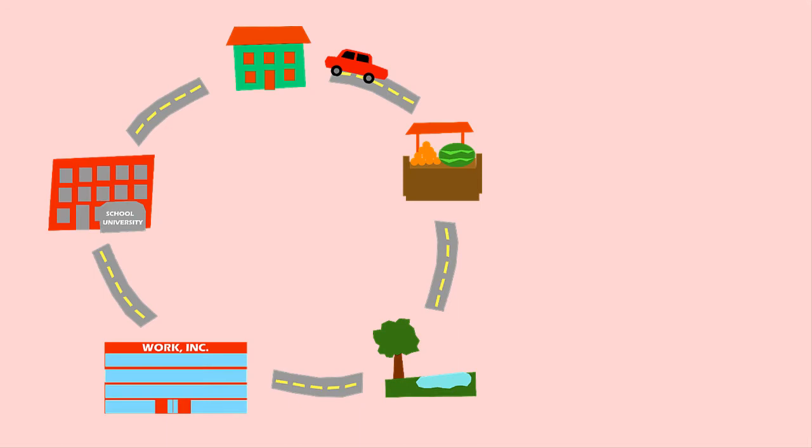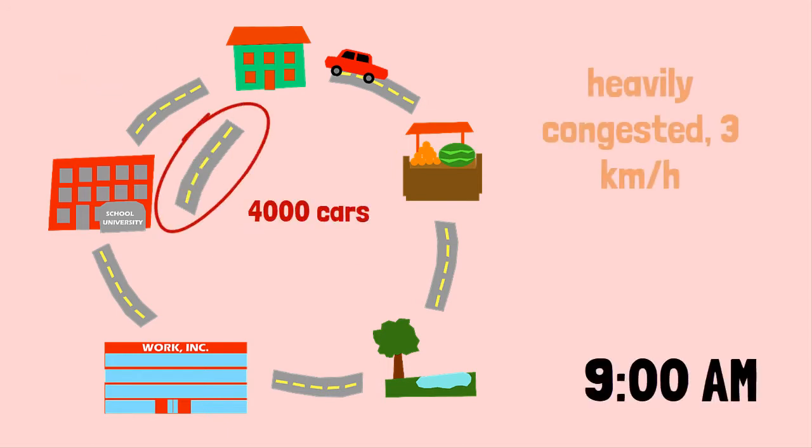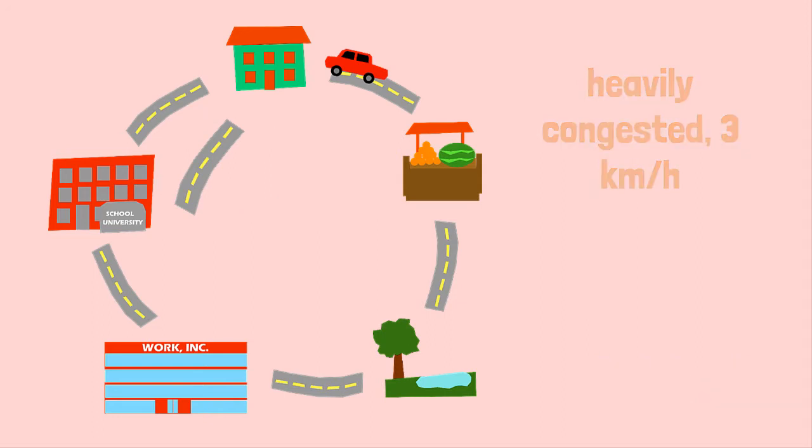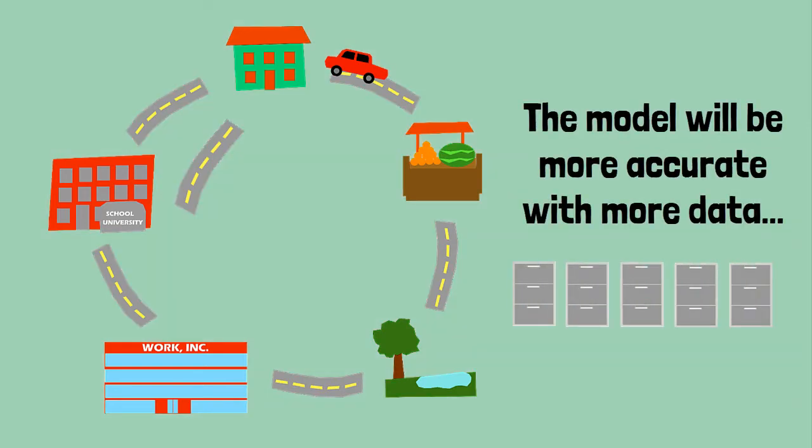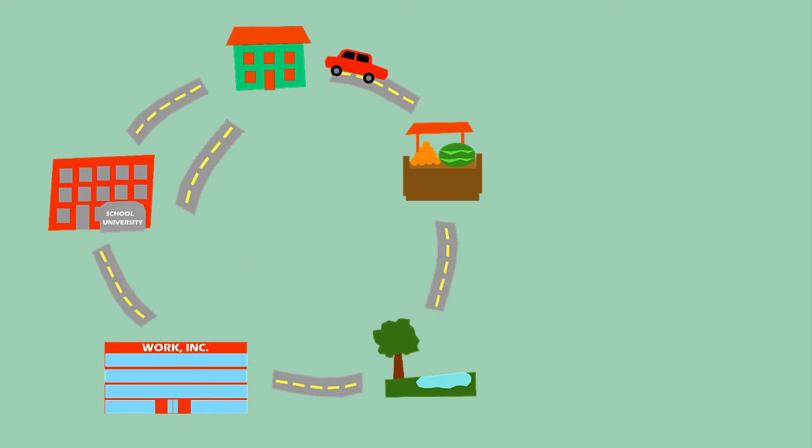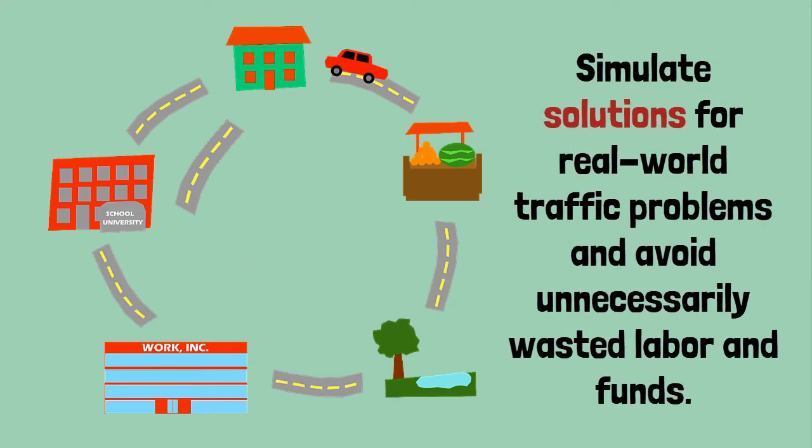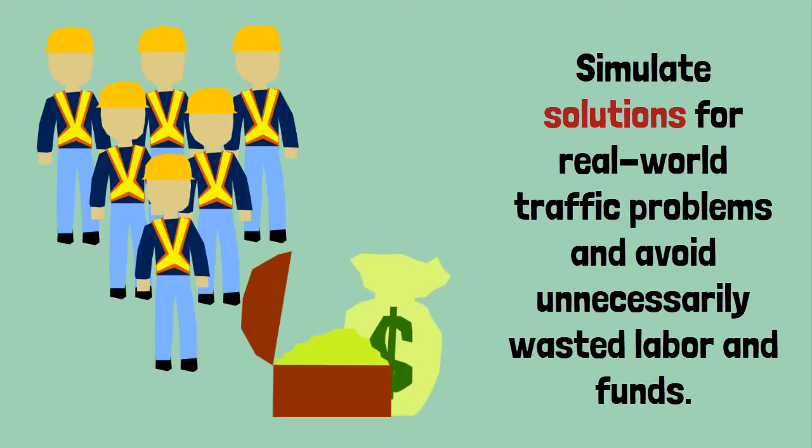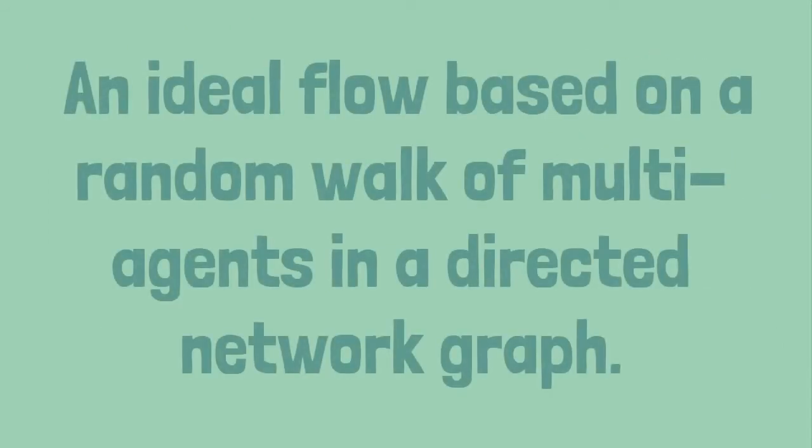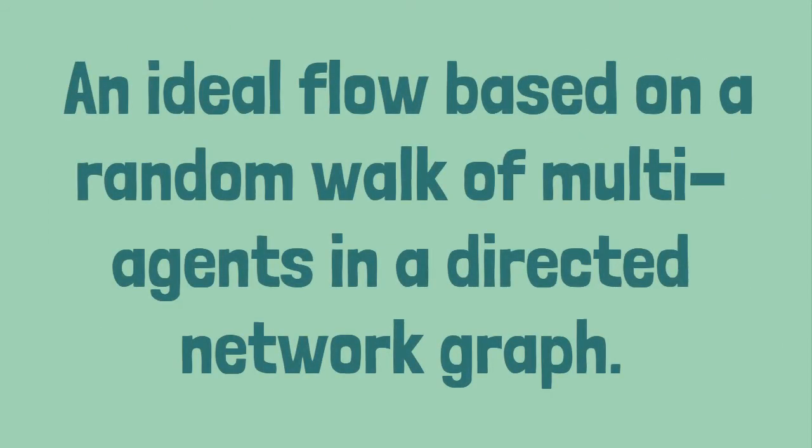For example, you know that more people need to go to the school than to the park, or that they're more likely to take this road, or that a certain number of cars go through this road at certain times, and there's always this much traffic. And of course, the model will be more accurate the more data there is. But regardless, the model will provide the ability to simulate solutions for real-world traffic problems, and avoid unnecessarily wasted labor and funds. The aim was to create an ideal flow based on random walk of route choice agents in a directed network graph. And I'm going to explain to you what exactly this means and how it works.